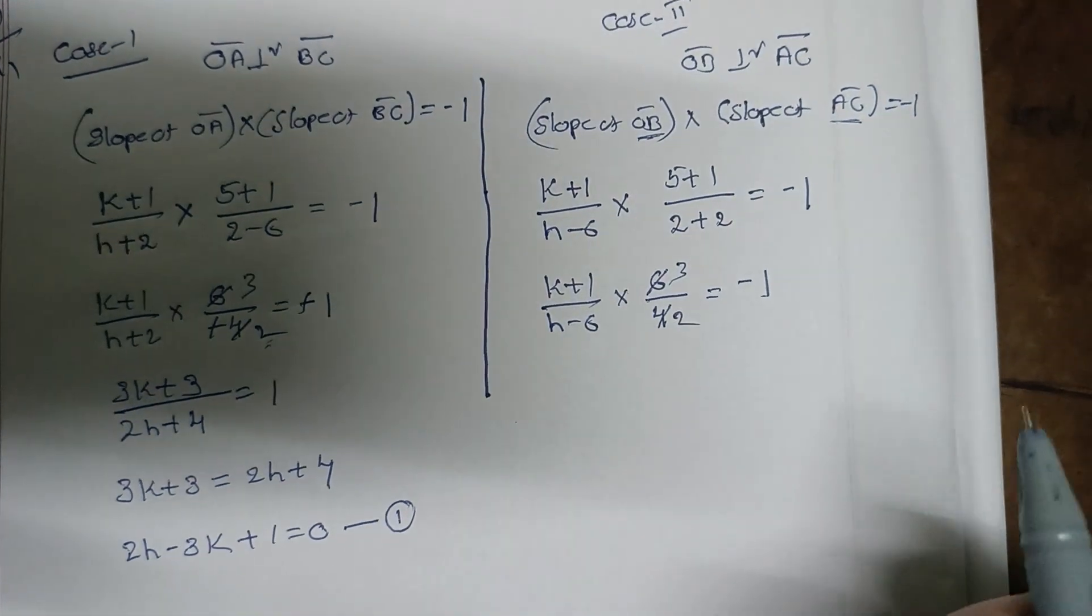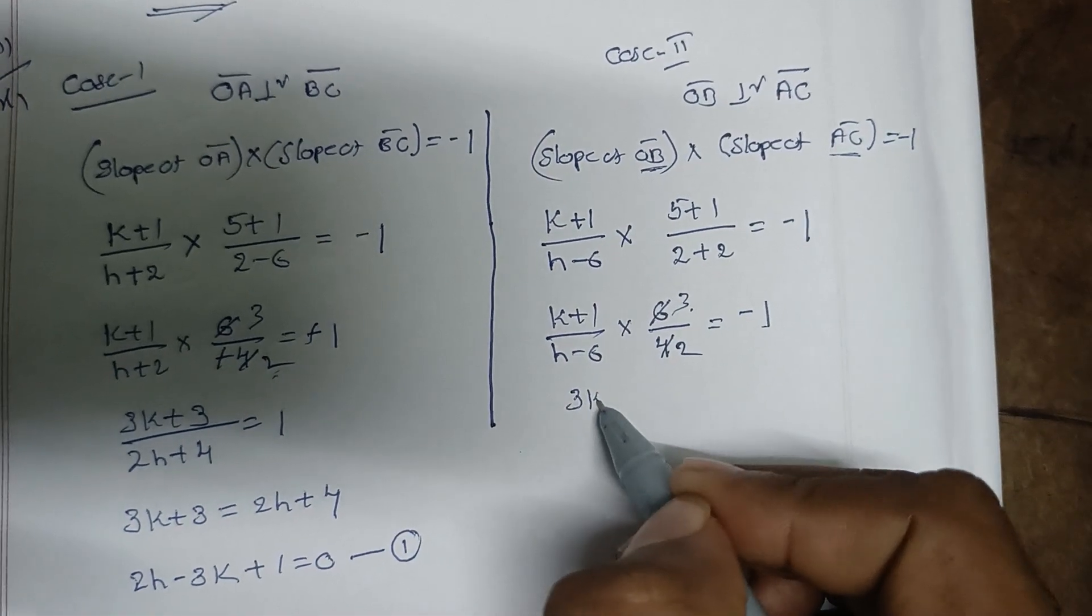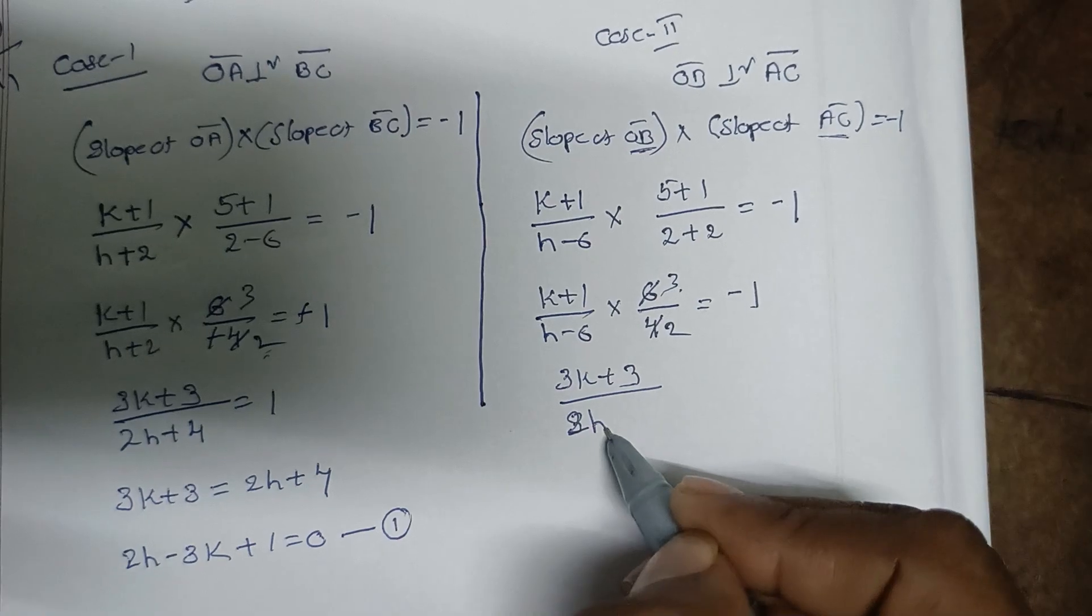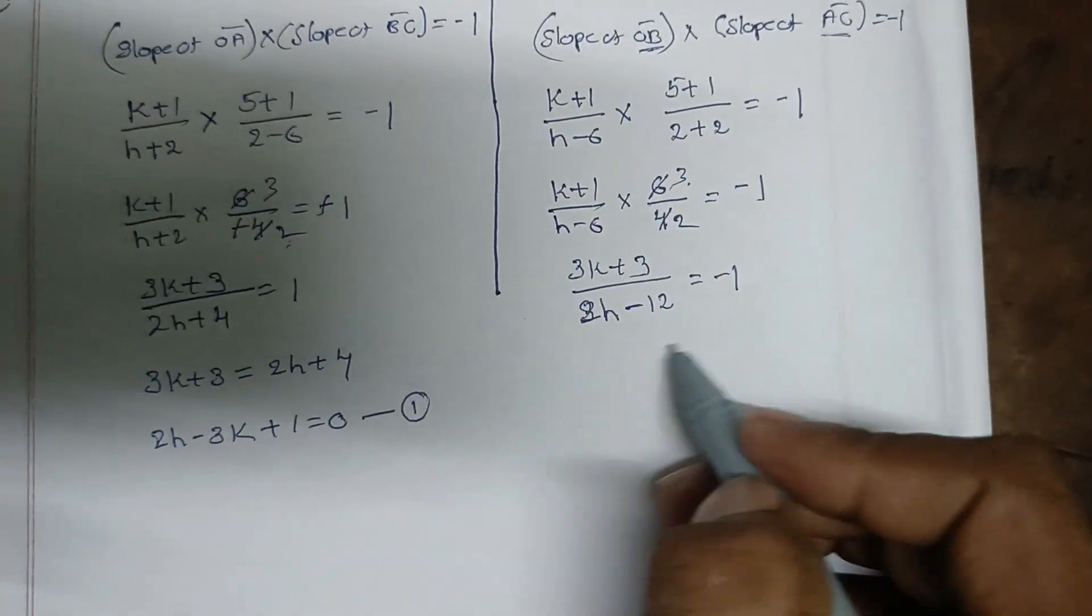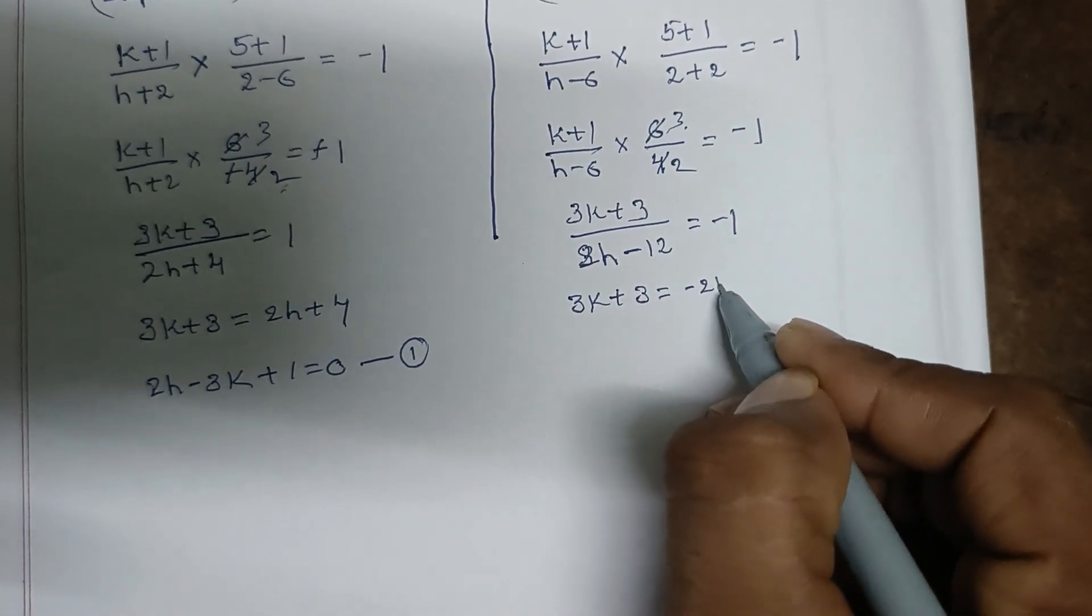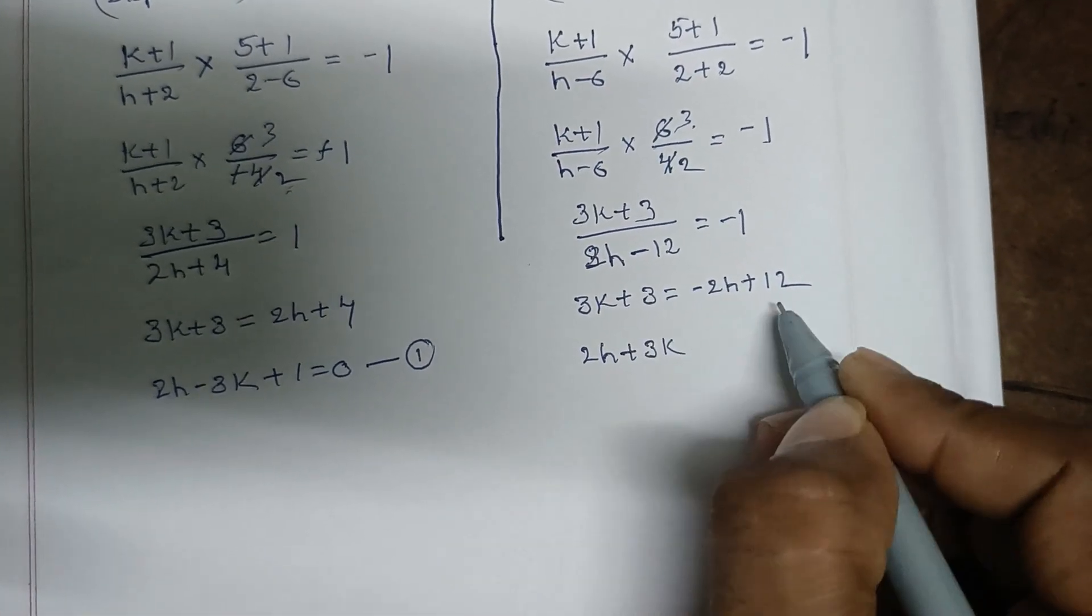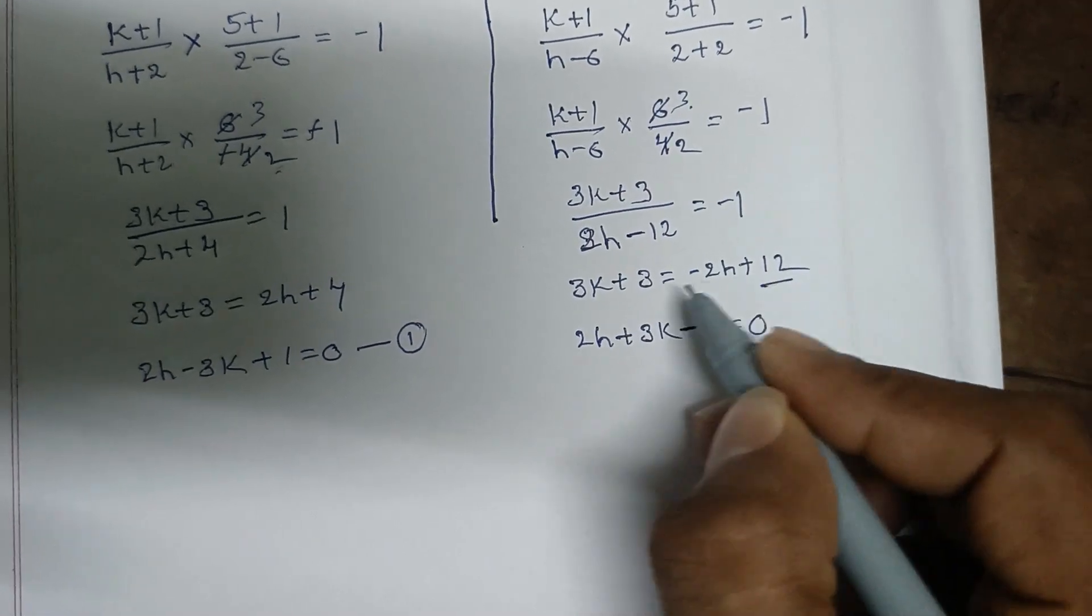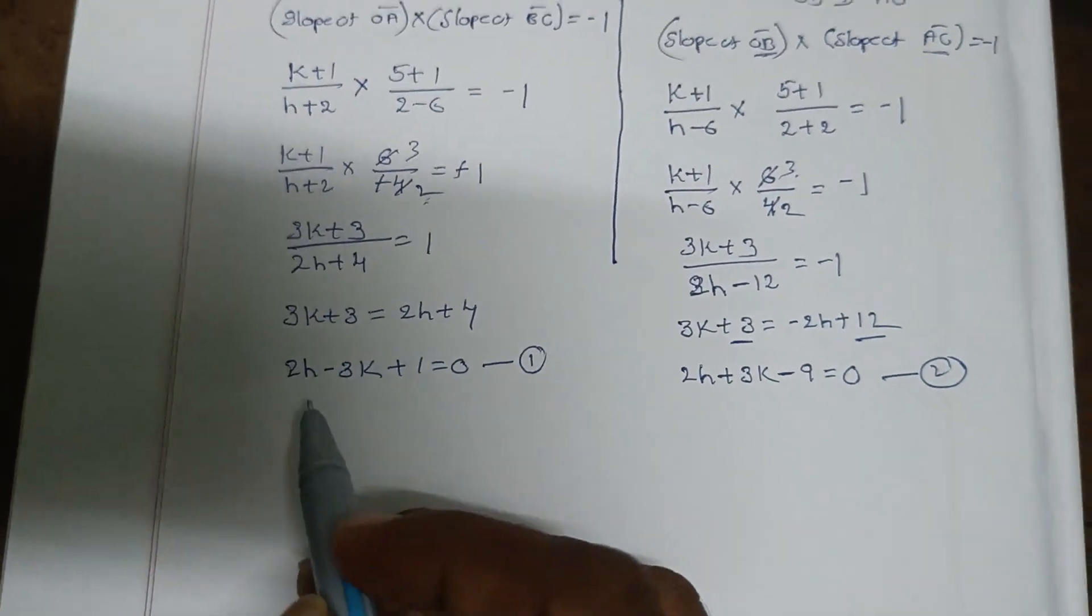After simplification: (k + 1)/(h - 6) times appropriate slope = -1. This gives us 2h + 3k - 9 = 0 as our second equation.